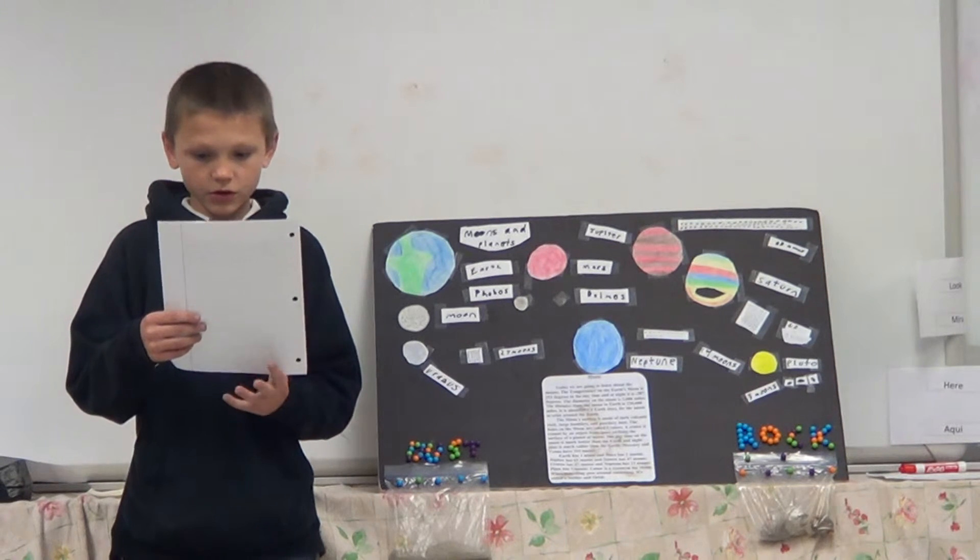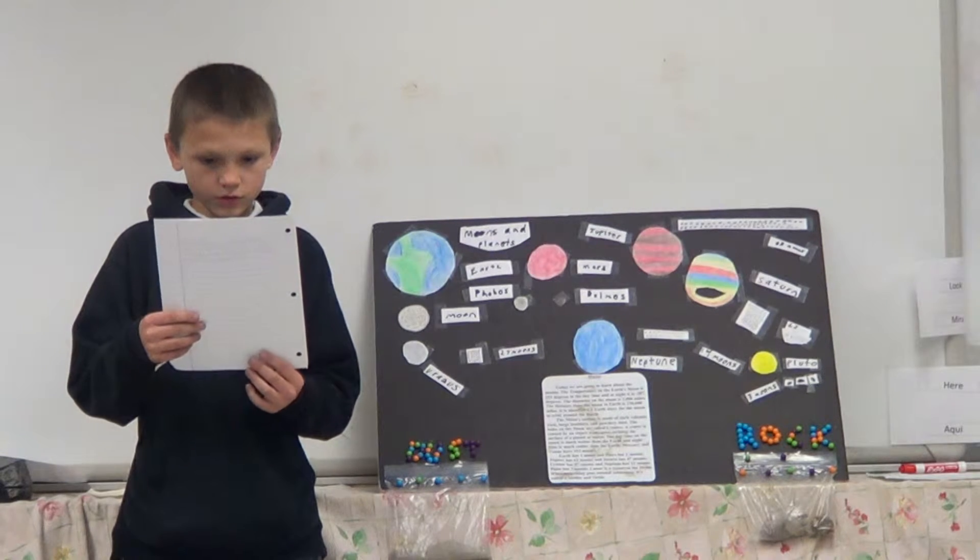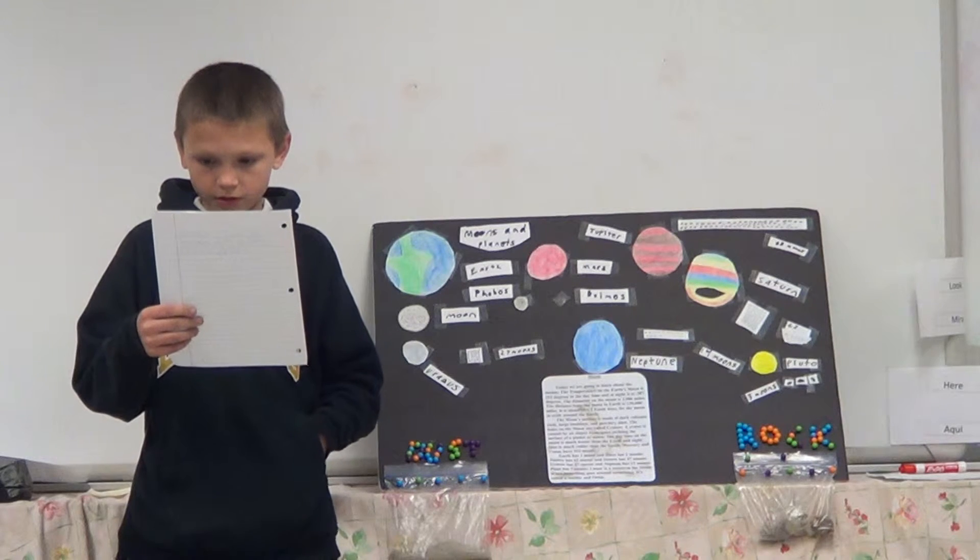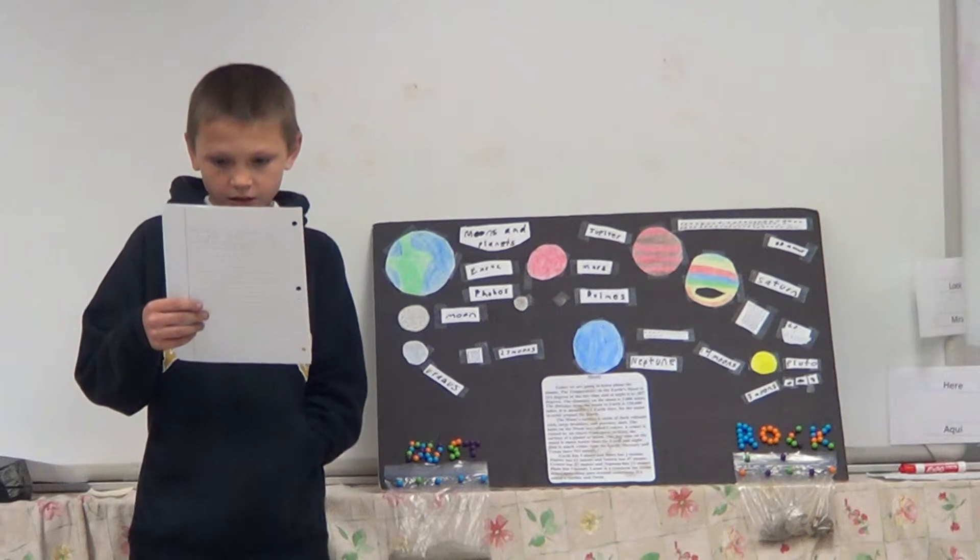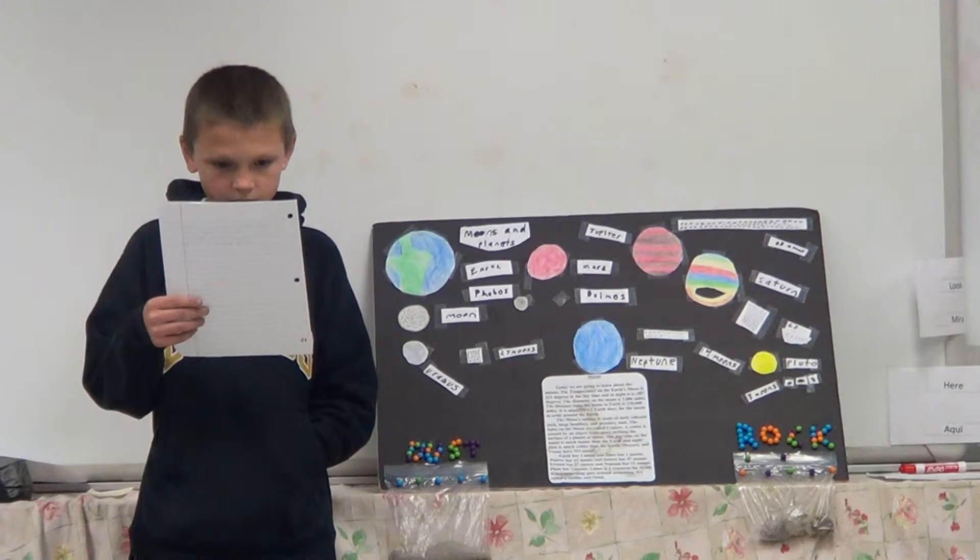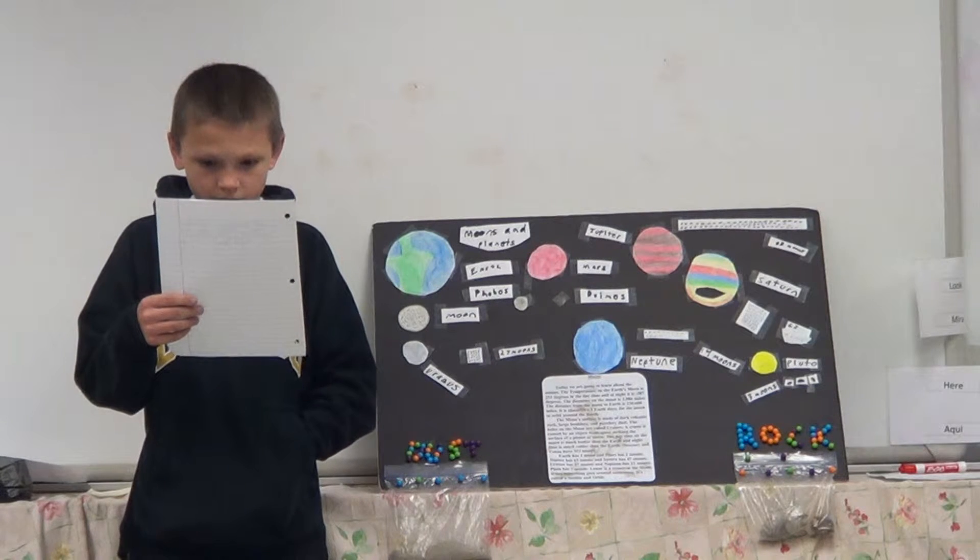The temperature on the earth... The moon is 253 degrees. And at night it is minus 387 degrees. The temperature on the moon is 208 degrees.